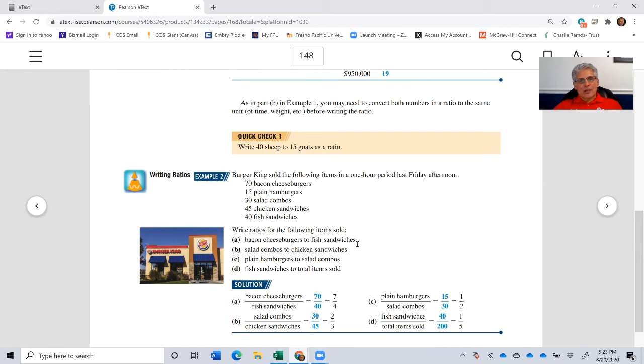Bacon cheeseburger to fish sandwiches: bacon cheeseburgers was 70, fish sandwiches was 40, 70 to 40, so the ratio would be 7 to 4. So for every 7 bacon cheeseburgers, we sold 4 fish sandwiches.